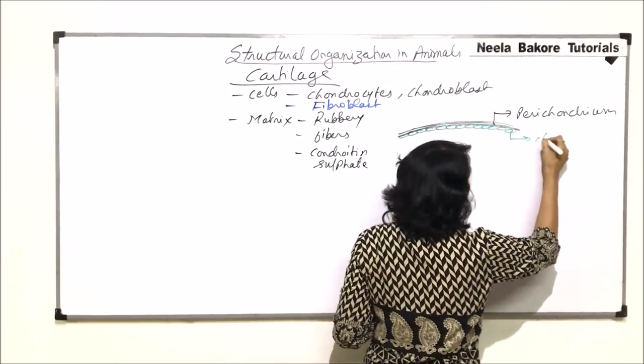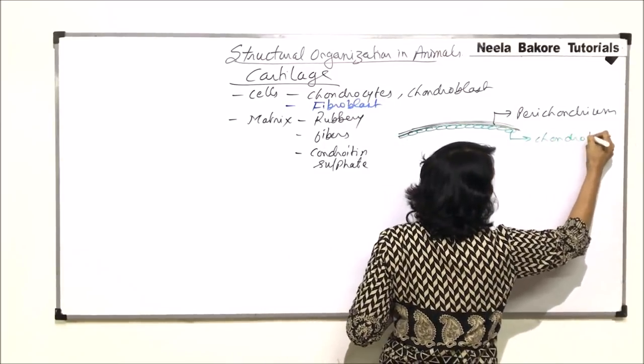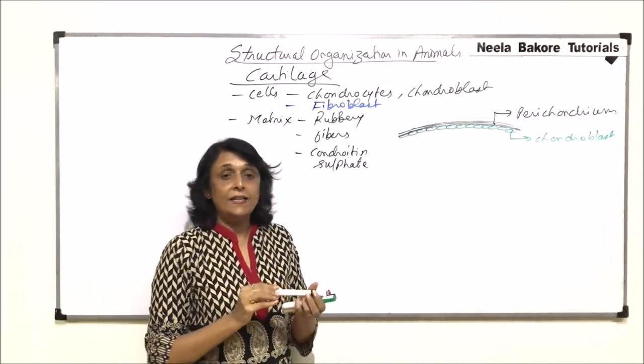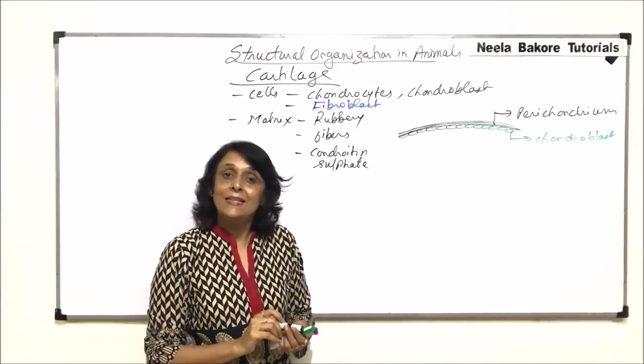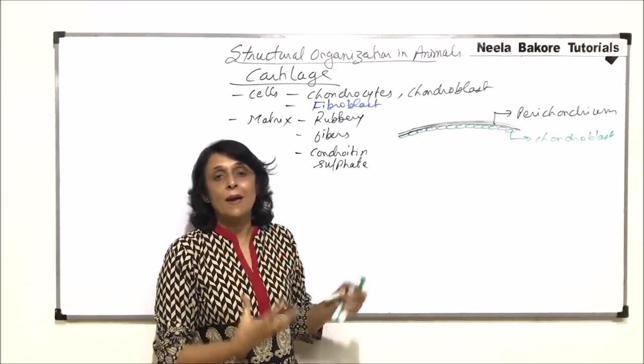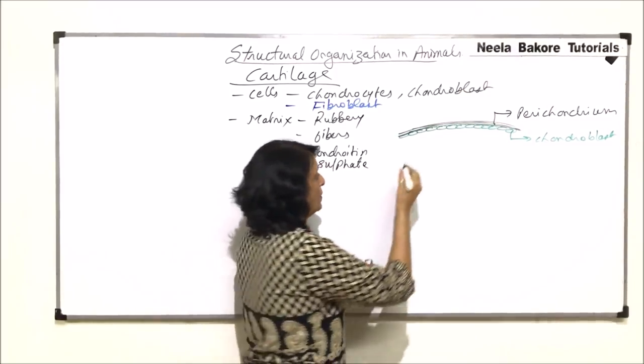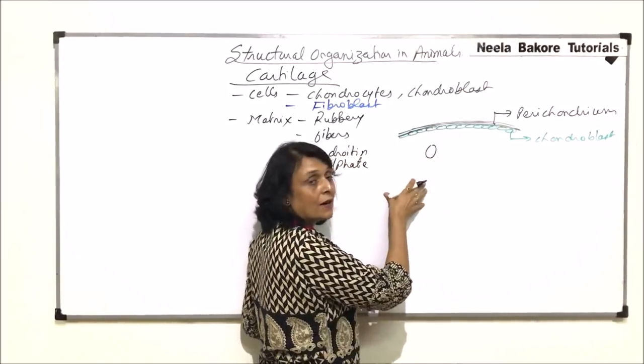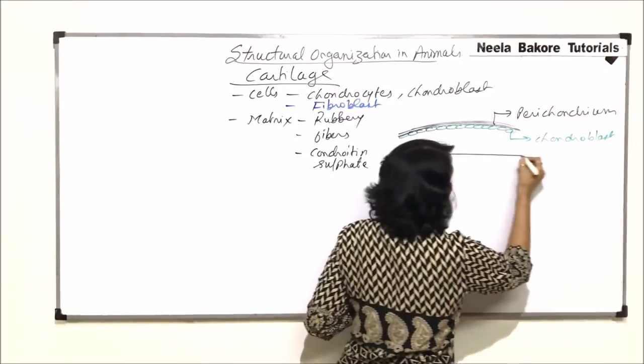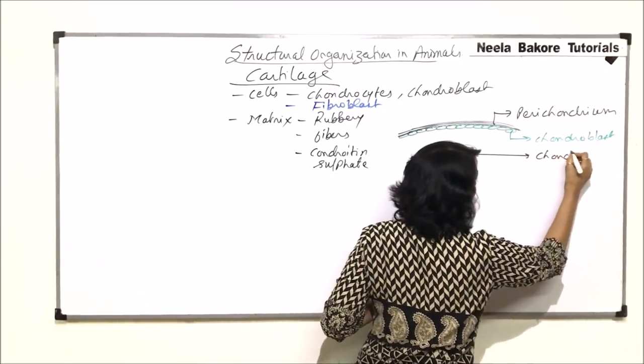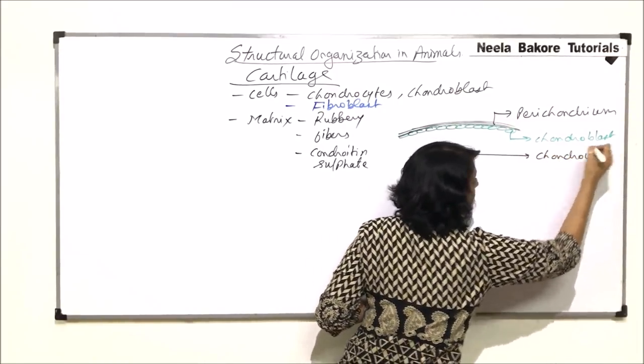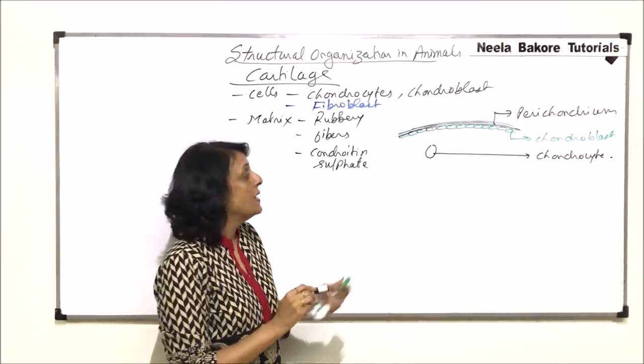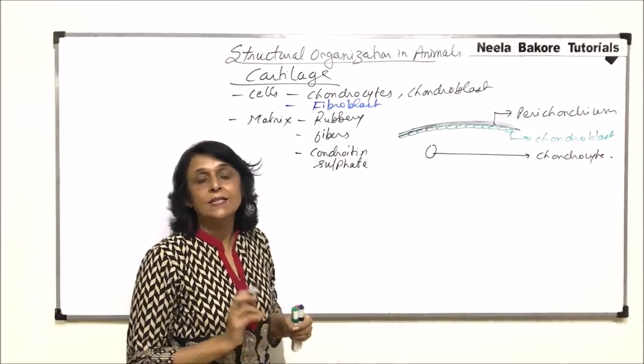These are the chondroblasts. Chondroblast cells migrate, they move in, and now they start secreting the matrix around them. This is a chondroblast which has come here and it has produced a matrix around it, so now we start calling it chondrocyte. It is the chondroblast itself which changes into the chondrocytes.